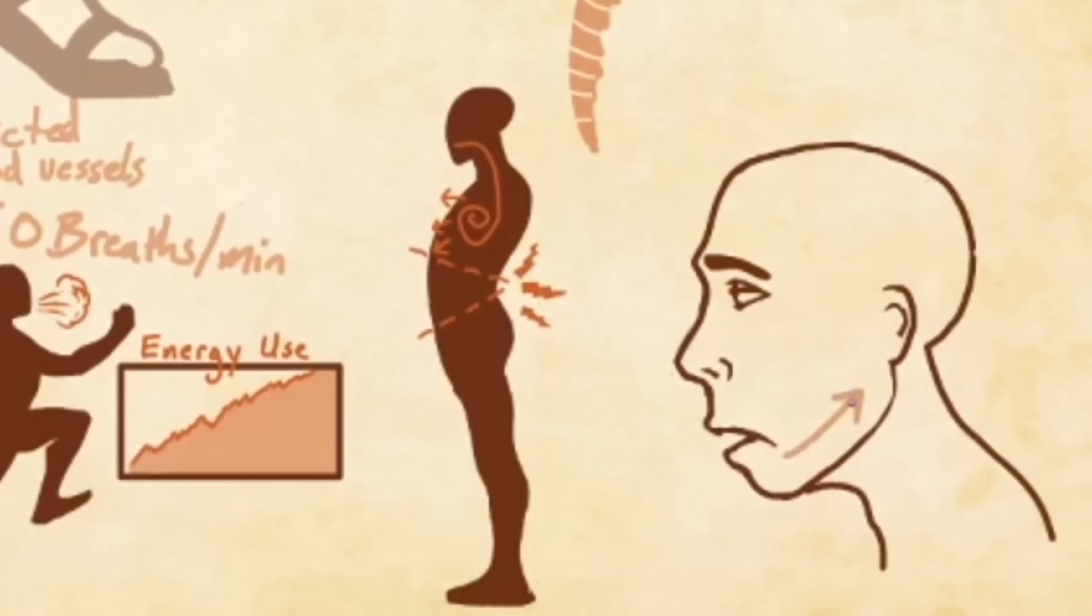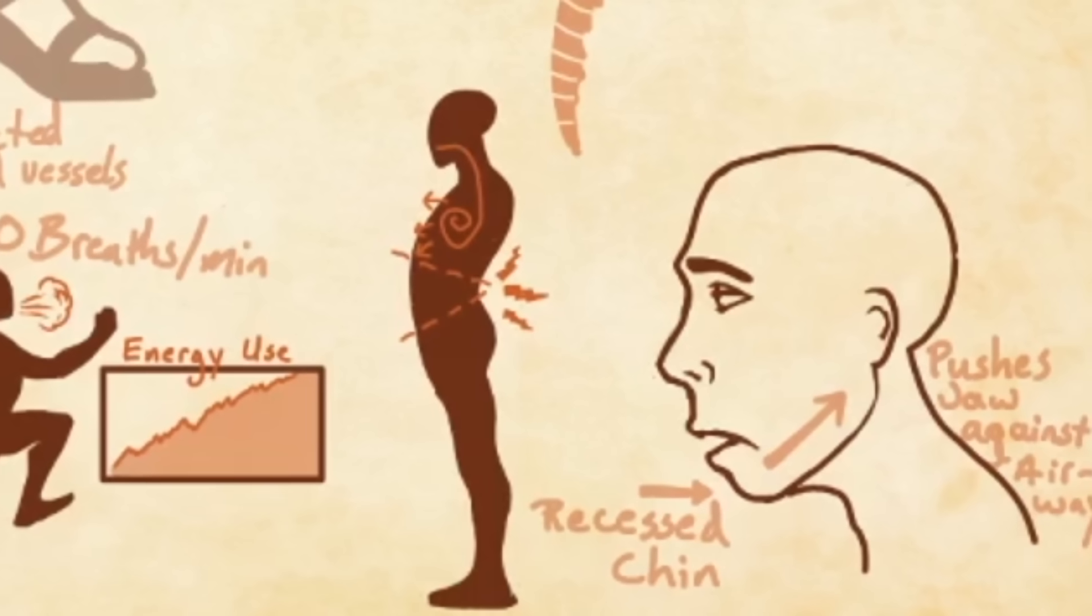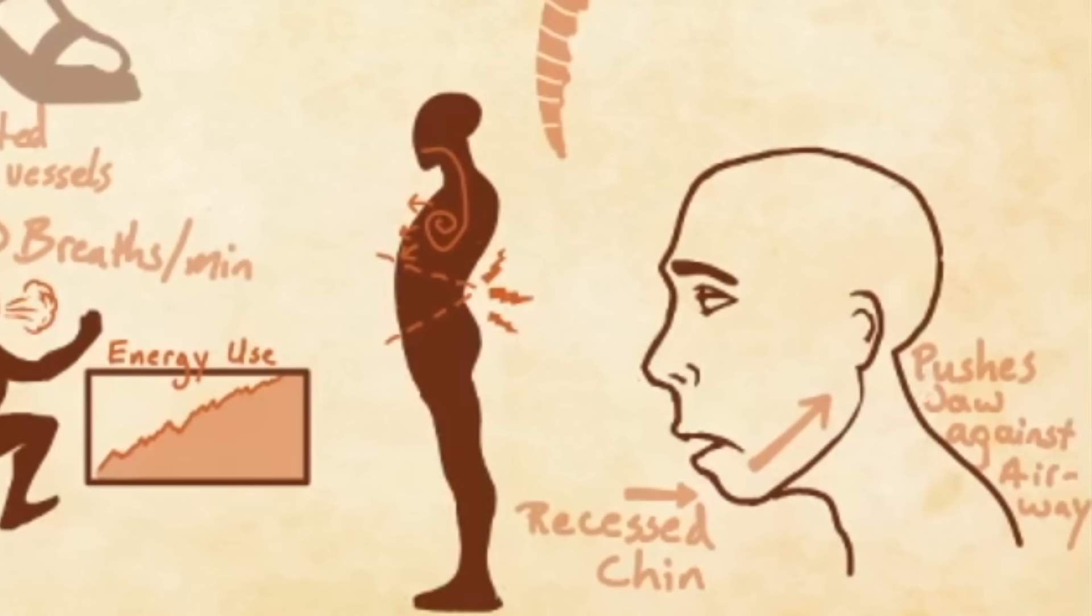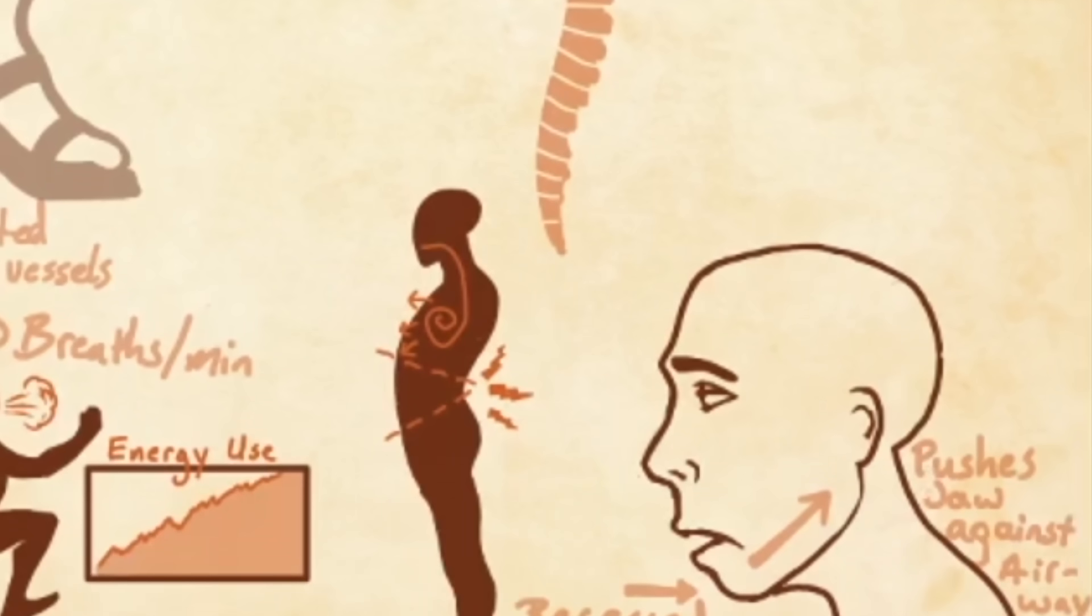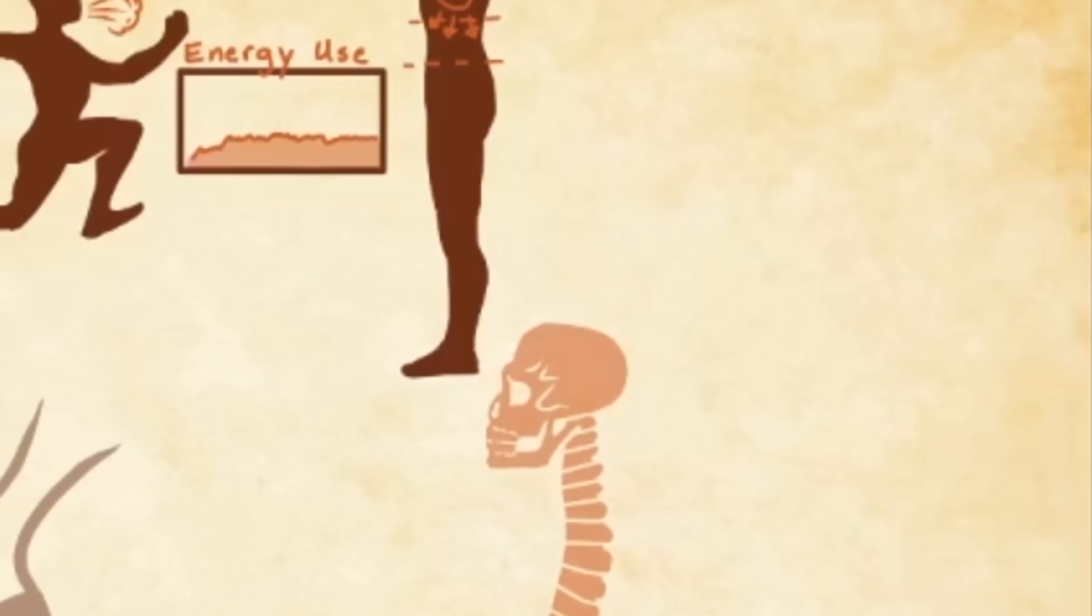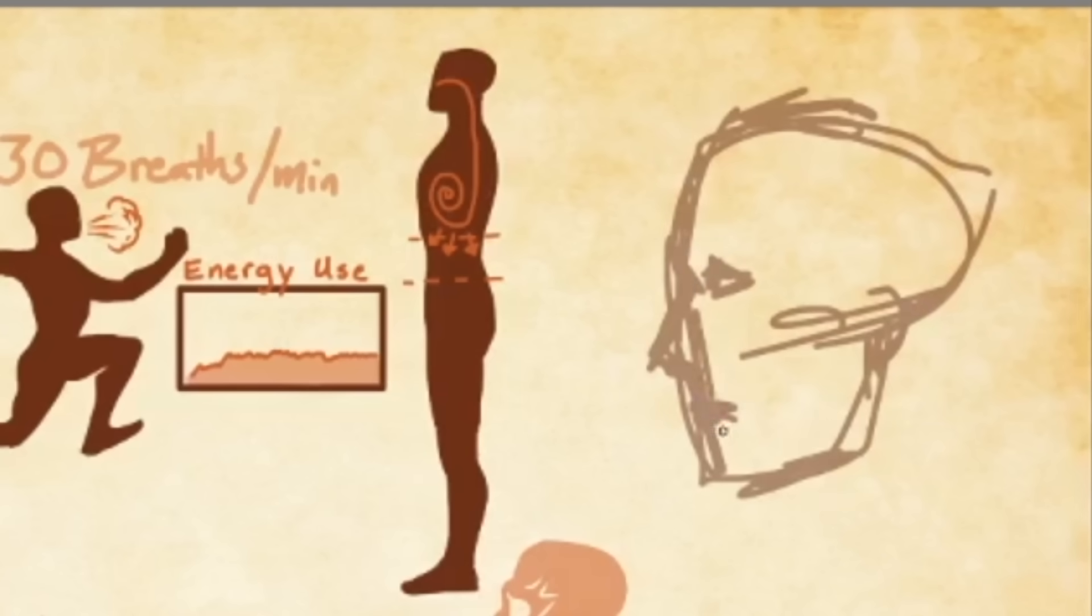The second major postural issue caused by mouth breathing can be found in the face and has a lot to do with what is normally considered an attractive facial structure. When breathing through the mouth, the mouth must remain open. This alters the muscles used for breathing and creates a recessed jaw. The recessed jaw partially closes off the airways, making breathing even harder and slowly changing the entire structure of the face.